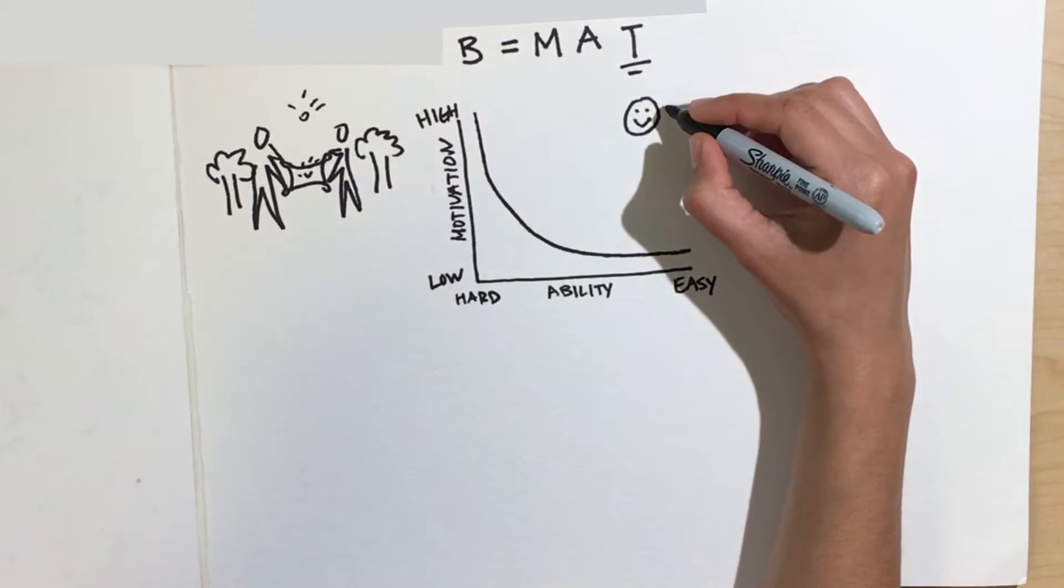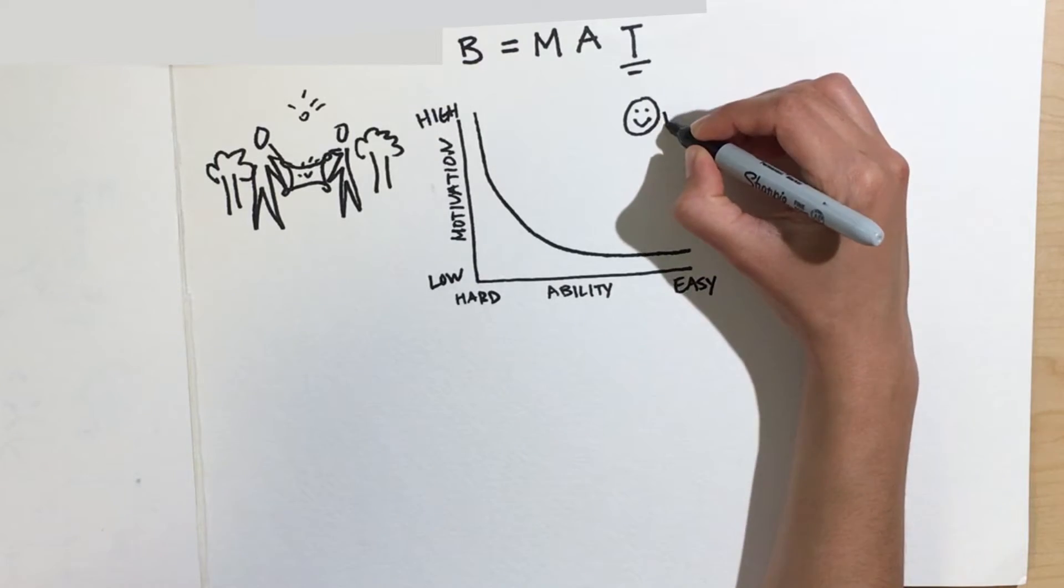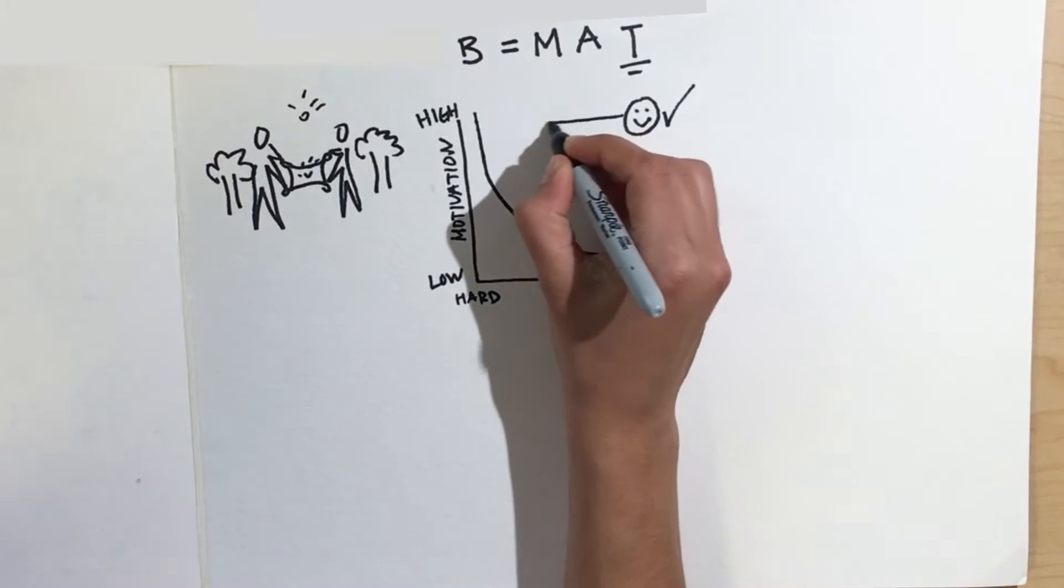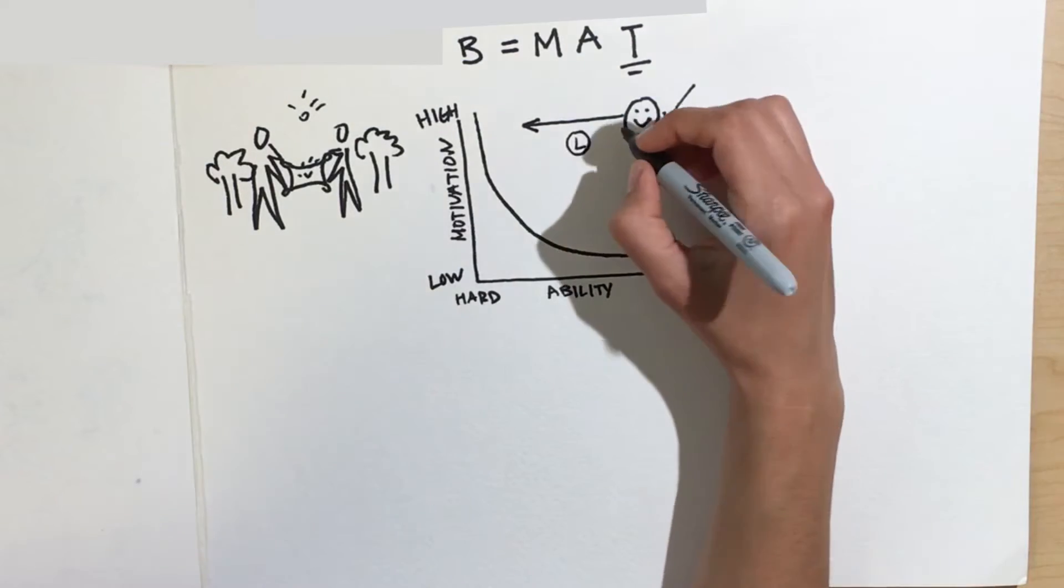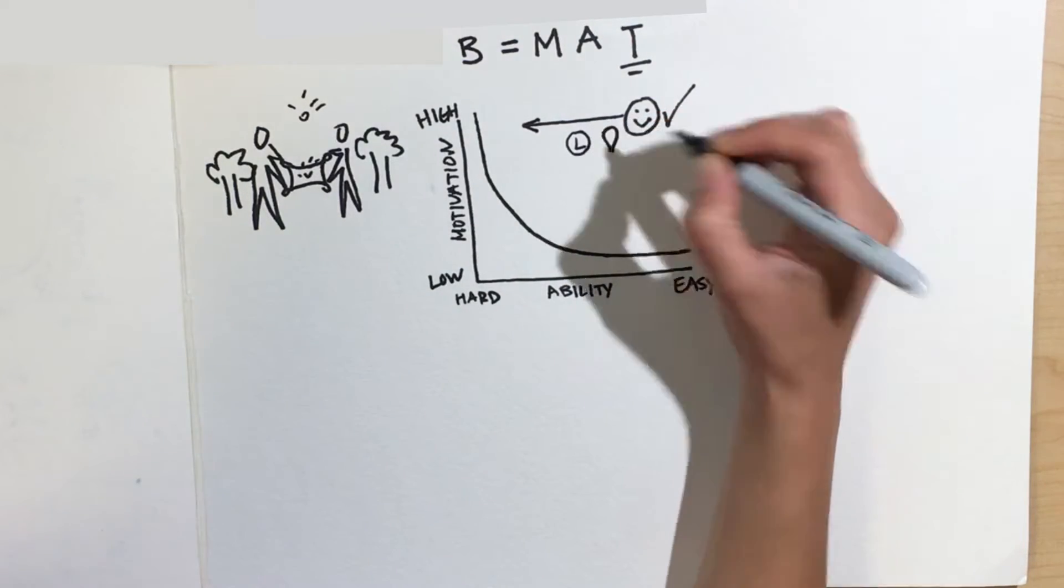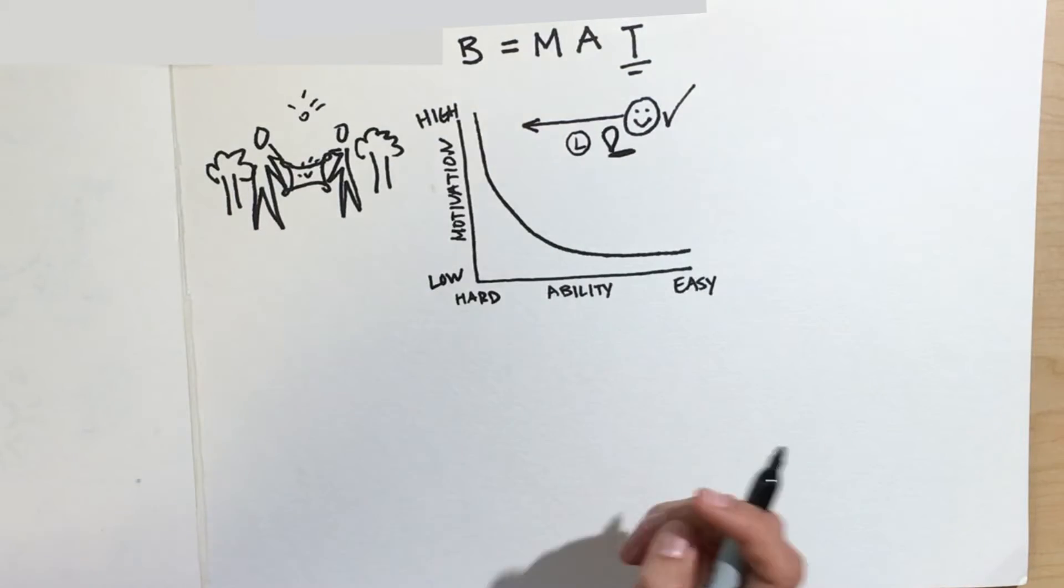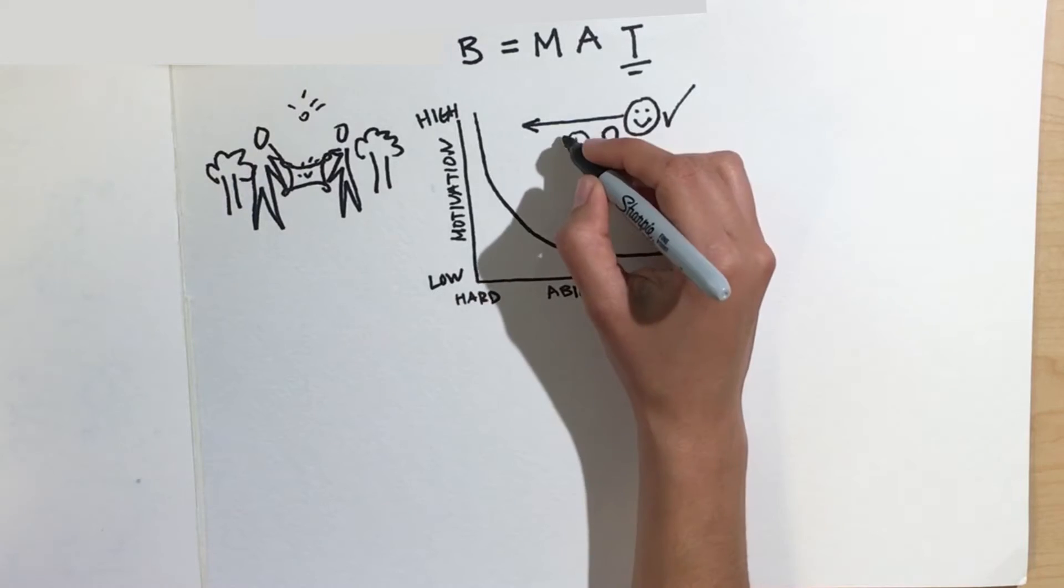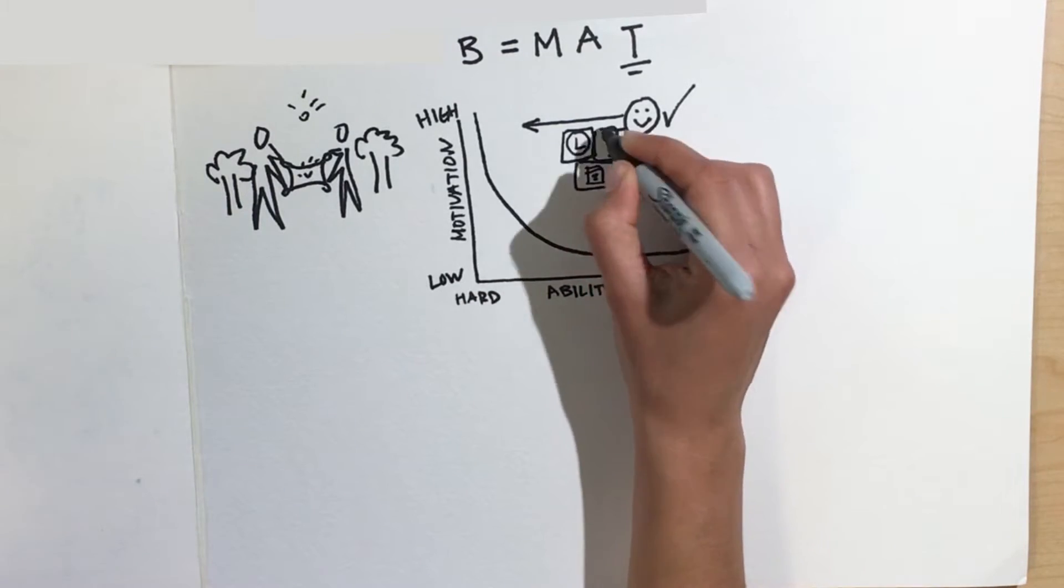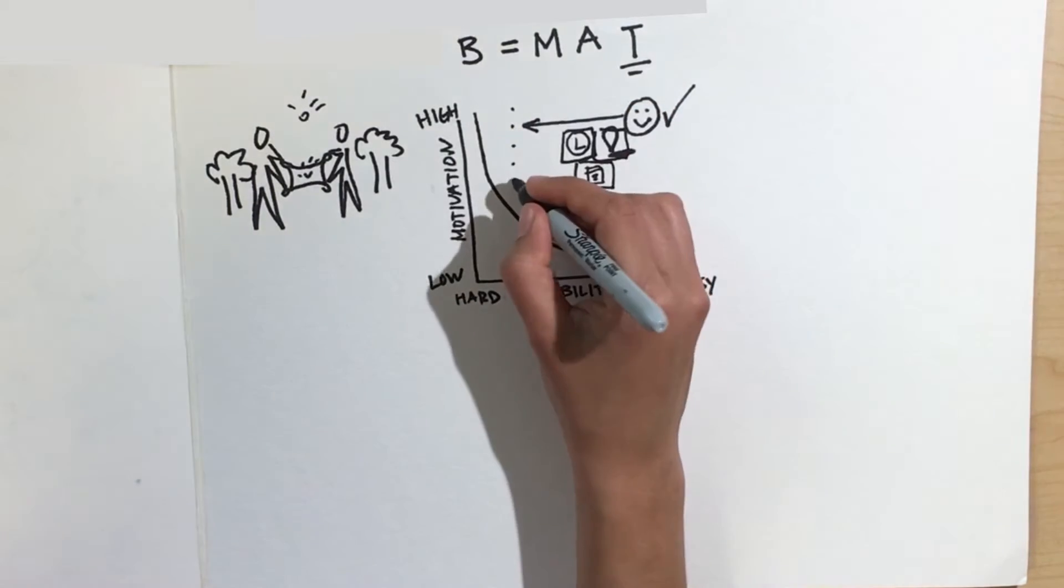And people performed this behavior. Then I started varying ability and making it harder to perform this behavior by increasing the amount of time I asked people to play, having people move to a different location, or having people show up based on a calendar event. By decreasing ability, I was able to figure out where people lied in the motivation range.